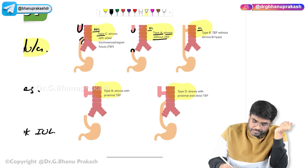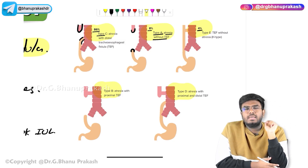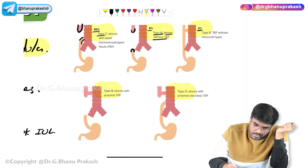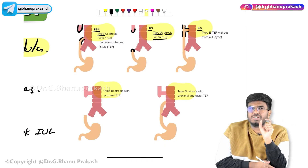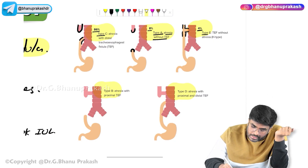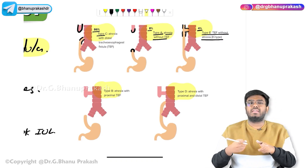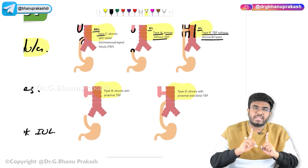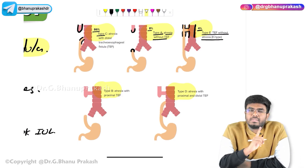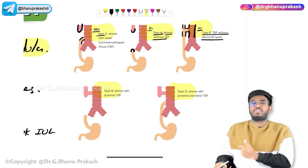In Type E, very rare at 4%, the proximal esophagus has a fistula and this is the distal esophagus — but there is no atresia anywhere in the esophagus. Type E does not have any atresia. It looks like the letter H, so it is sometimes called an H-type fistula.